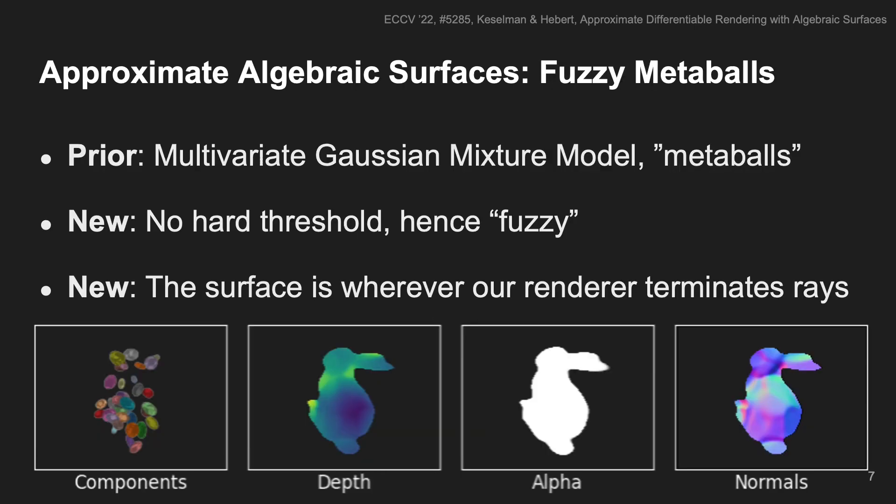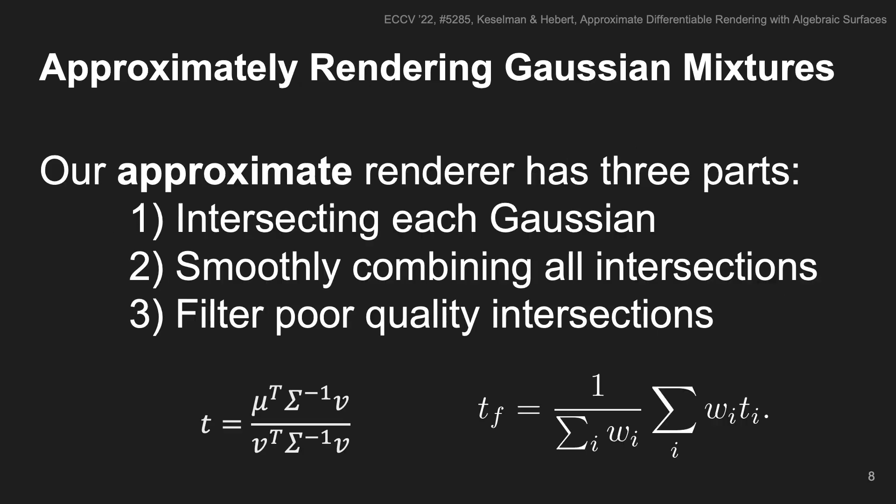Our renderer is enabled by using fuzzy metaballs, an extension of metaballs where the surface definition is fuzzy, defined only by where our renderer terminates rays. You can see examples of depth, alpha, and normals produced by our renderer. The basic structure of our renderer is to intersect each Gaussian independently, and then smoothly combine all intersections, and only afterwards filter out poor-quality intersections.